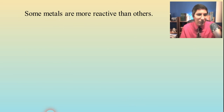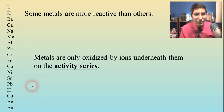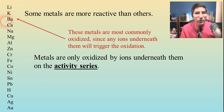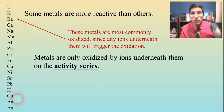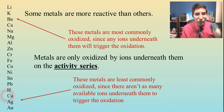Before we go too far into redox, we need to clarify that some metals are more reactive than others. This is called an activity series. Metals tend to be oxidized by metal ions, but only by the ions that are underneath them on this activity series. Metals toward the top are very commonly oxidized because there are many ions below them, whereas metals toward the bottom don't get oxidized as often.